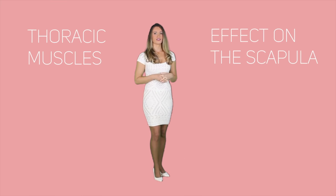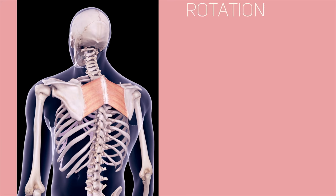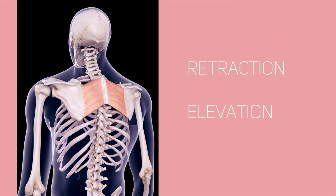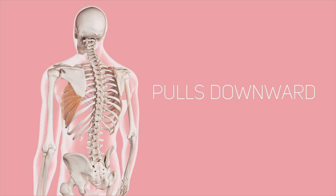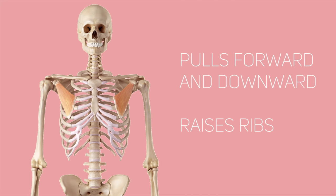The posterior thoracic muscles have an effect on the scapula. The trapezius muscle causes rotation of the scapula and pulls down the shoulder. The rhomboid major causes elevation, retraction, and rotation of the scapula, while the rhomboid minor causes retraction and elevation. The levator scapula solely causes elevation of the scapula. The serratus anterior pulls the scapula downward in an anterior direction. Finally, the pectoralis minor pulls the scapula forward and downward, in addition to raising the ribs.